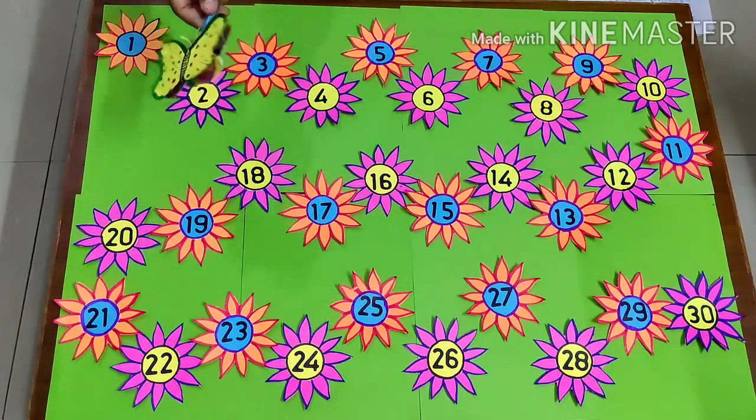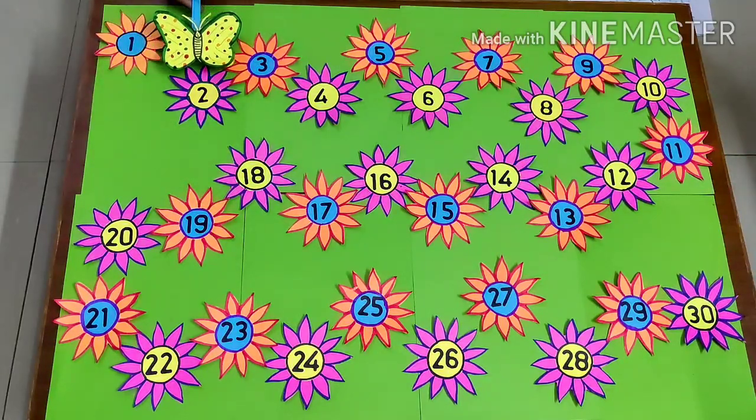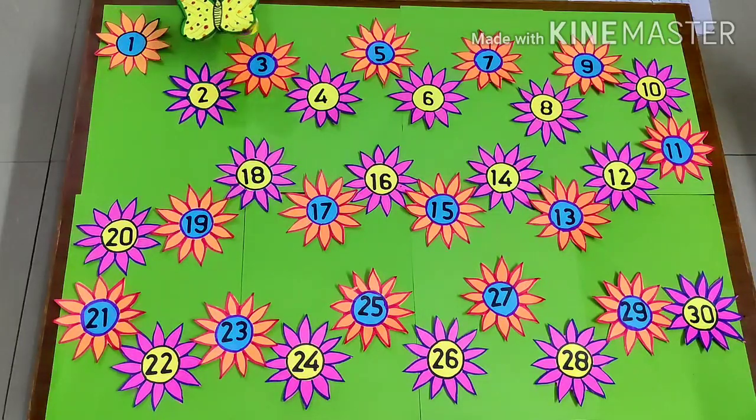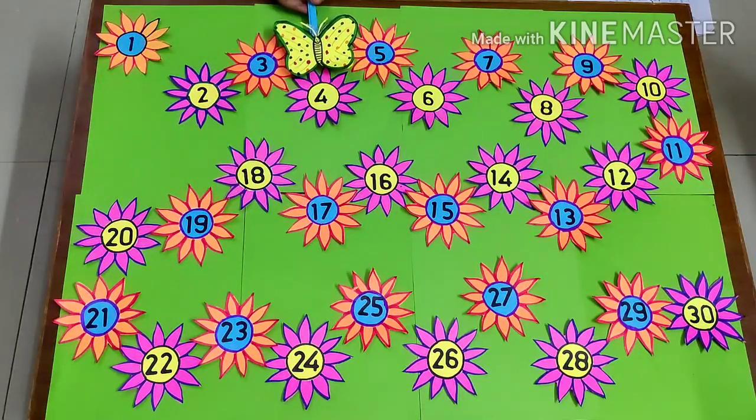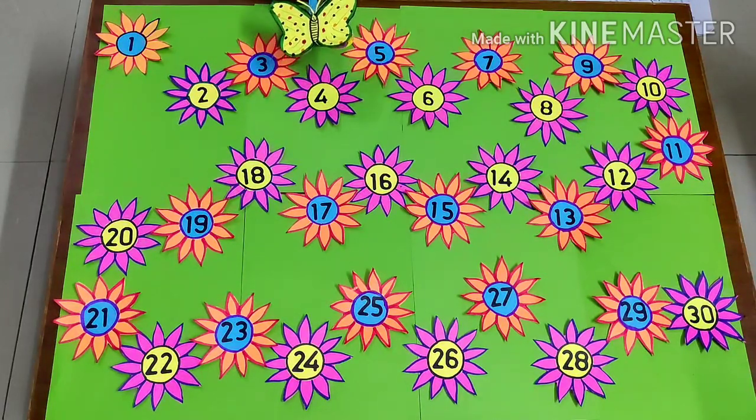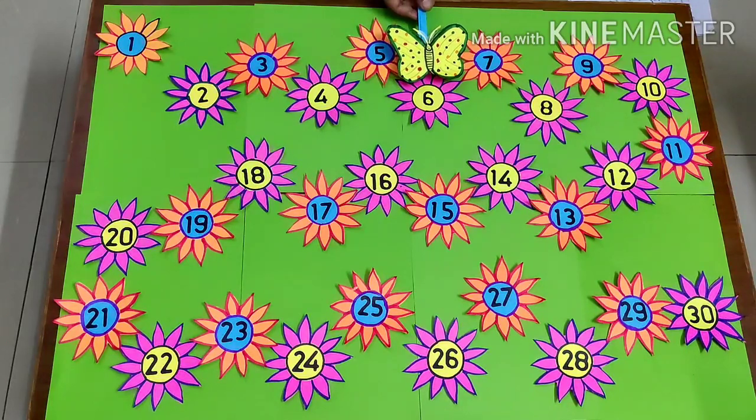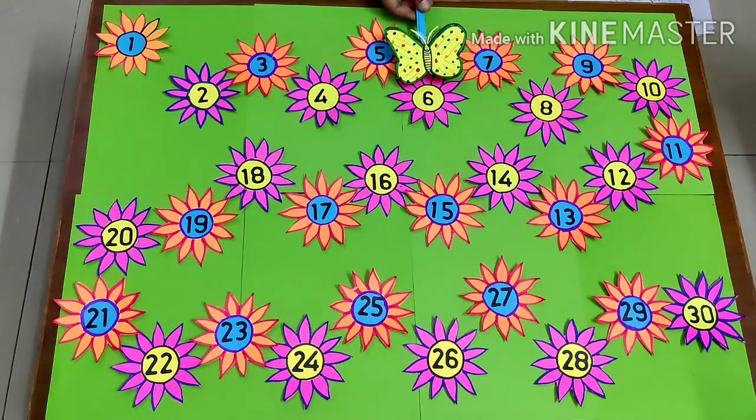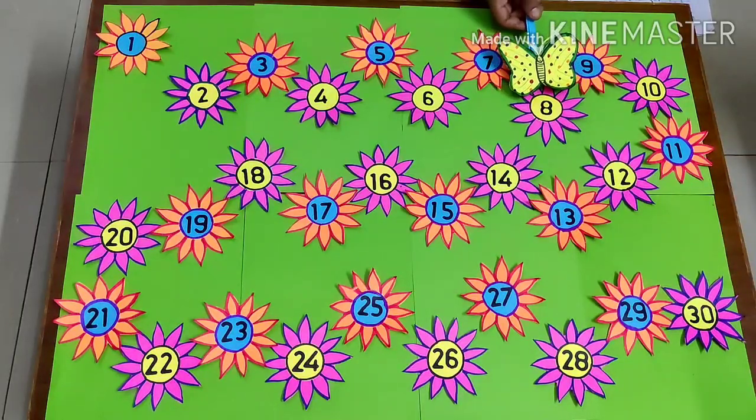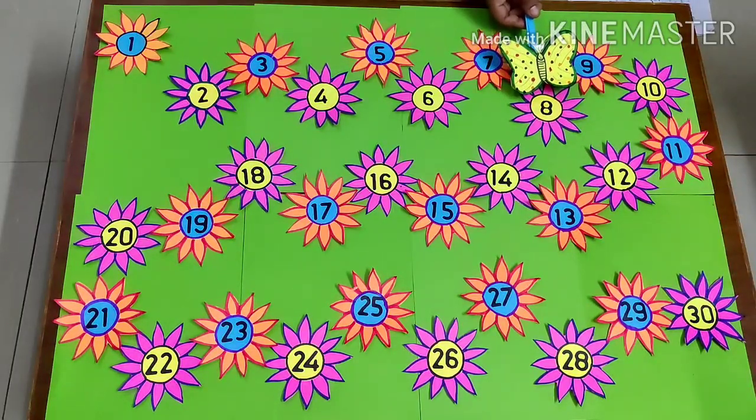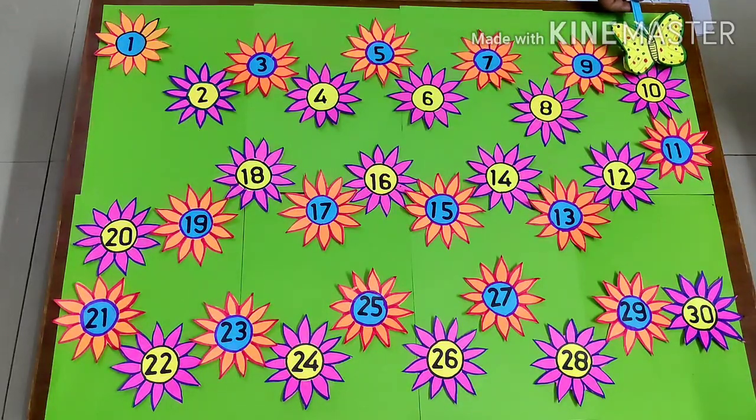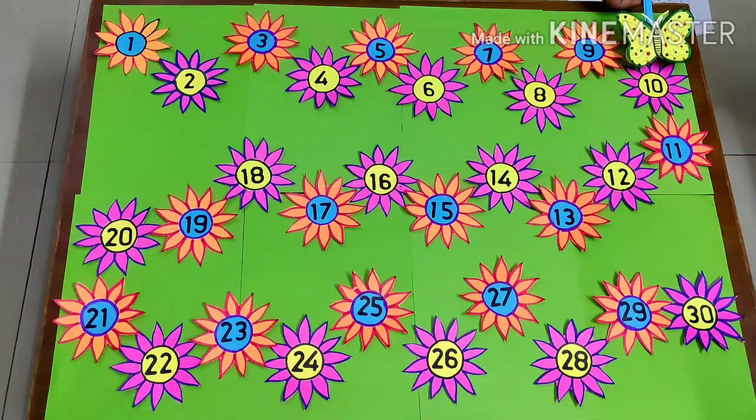First, the butterfly flies and sits on flower number 2. From flower number 2, it flies again and sits on flower number 4. After flower number 4, it moves to flower number 6, and then again on flower number 8. From flower number 8, it again flies to flower number 10.